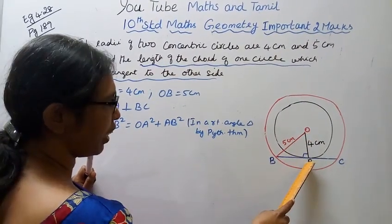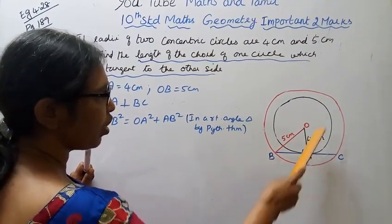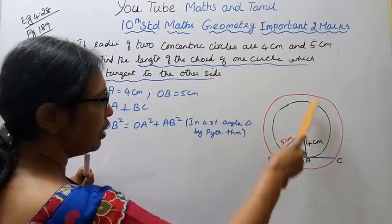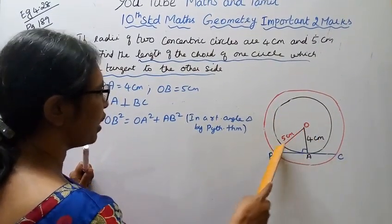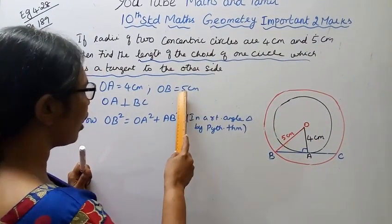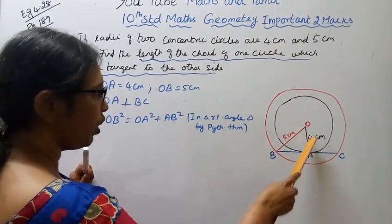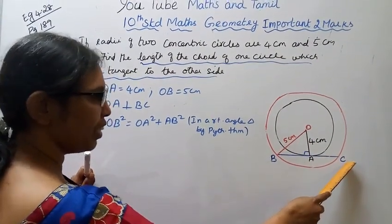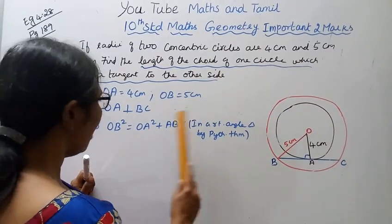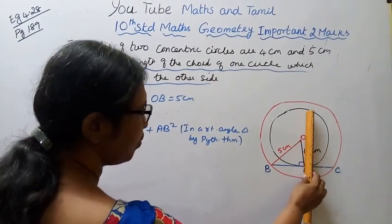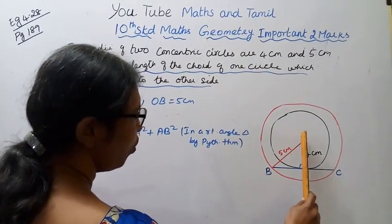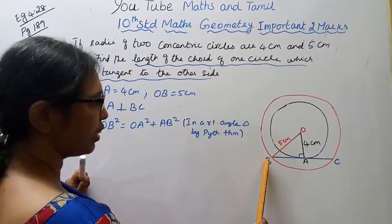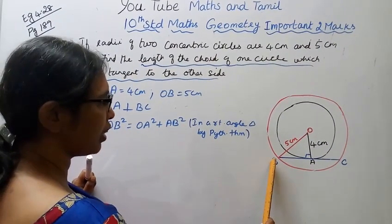In the concentric circle, OA (radius of inner circle) is given as four centimeters, and OB (radius of outer circle) is given as five centimeters. OA is perpendicular to BC. So this gives us a right angle triangle, and we apply the Pythagoras theorem.